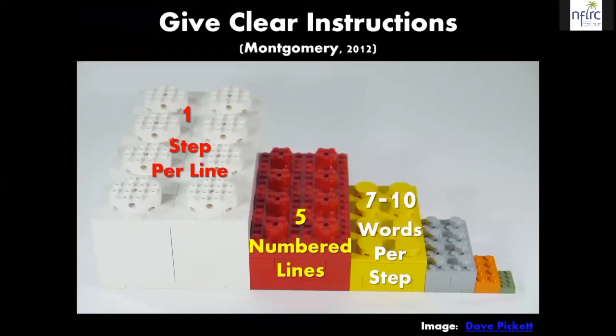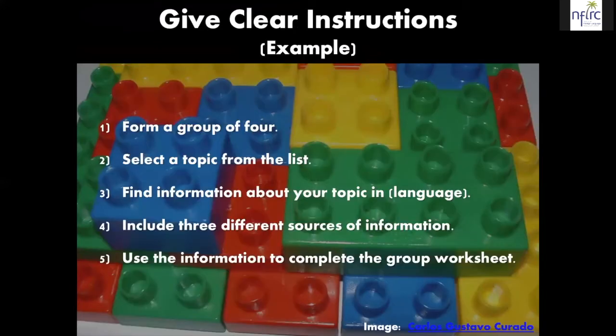We can establish norms for how learners interact and give clear instructions. Just to remind you: only one thing we want them to do for each line, five numbered lines, no more than seven to ten words per step. So that might look like: form a group of four; select a topic from the list; find information about your topic in Chinese; include three different sources of information; use the information to complete the group worksheet. Every step contains only one action. If I have more than five steps, it usually means I'm not being clear or I actually have two separate activities. Something this simple dramatically improves a learner's ability to complete a task.